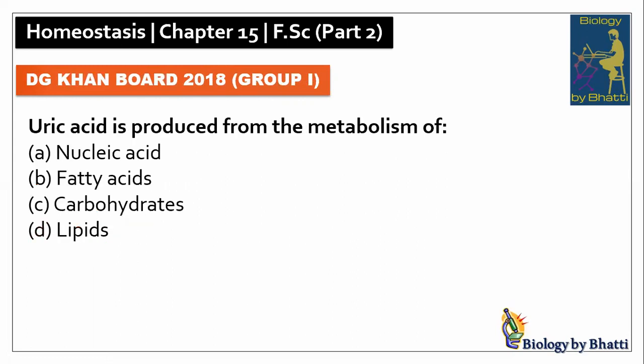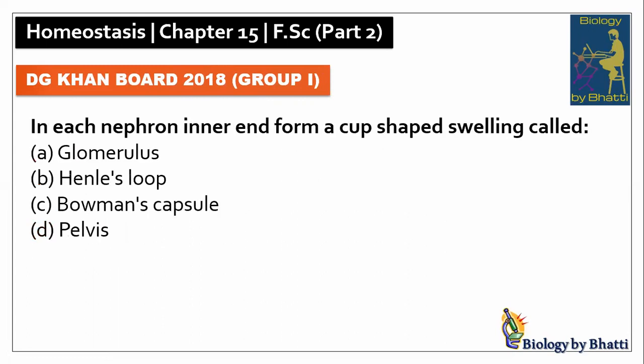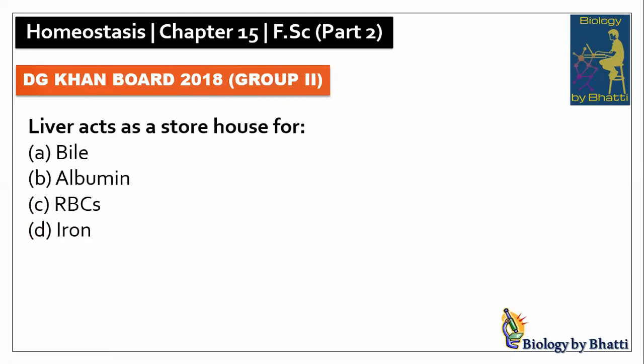DG Khan Board 2018 Group 1: uric acid is produced from the metabolism of nucleic acids, A option. In each nephron, the inner end forms a cup-shaped swelling known as Bowman's capsule, the answer is C option. DG Khan Board 2018 Group 2: liver acts as a storehouse for iron.